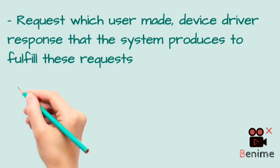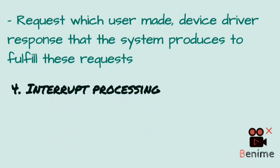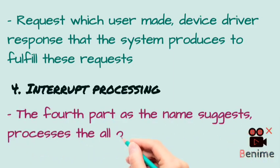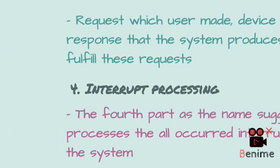The fourth part is interrupt processing. It is important for handling interrupts. Interrupts are signals or suspended programs — when an interrupt comes, the operating system will terminate the current process and look at options to handle it.